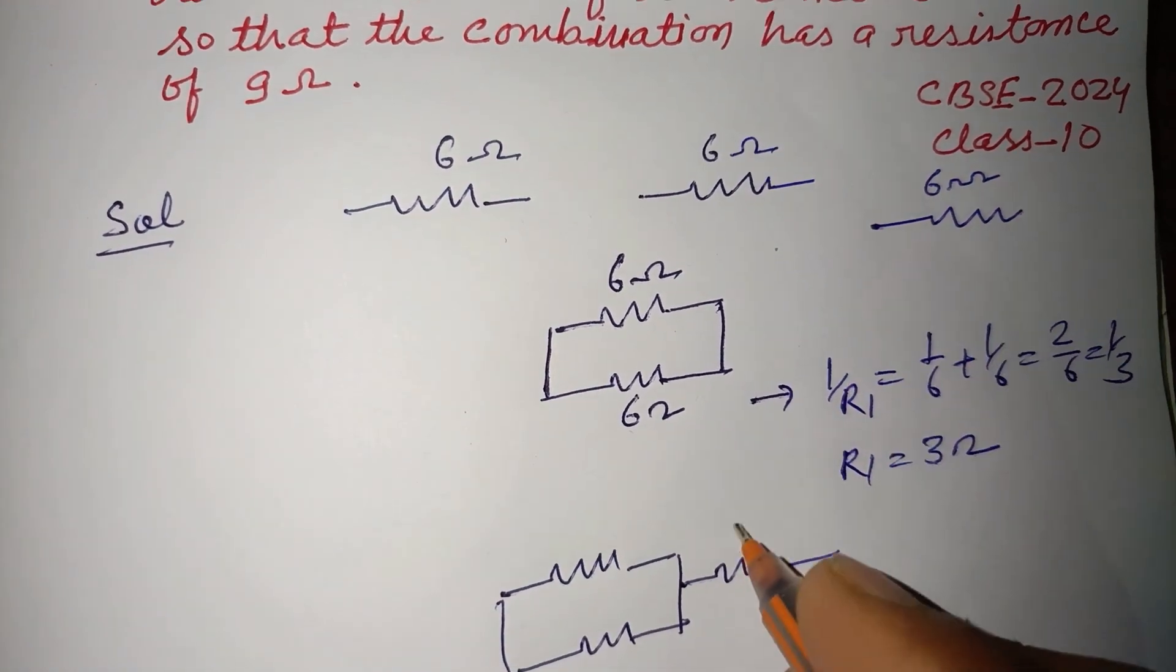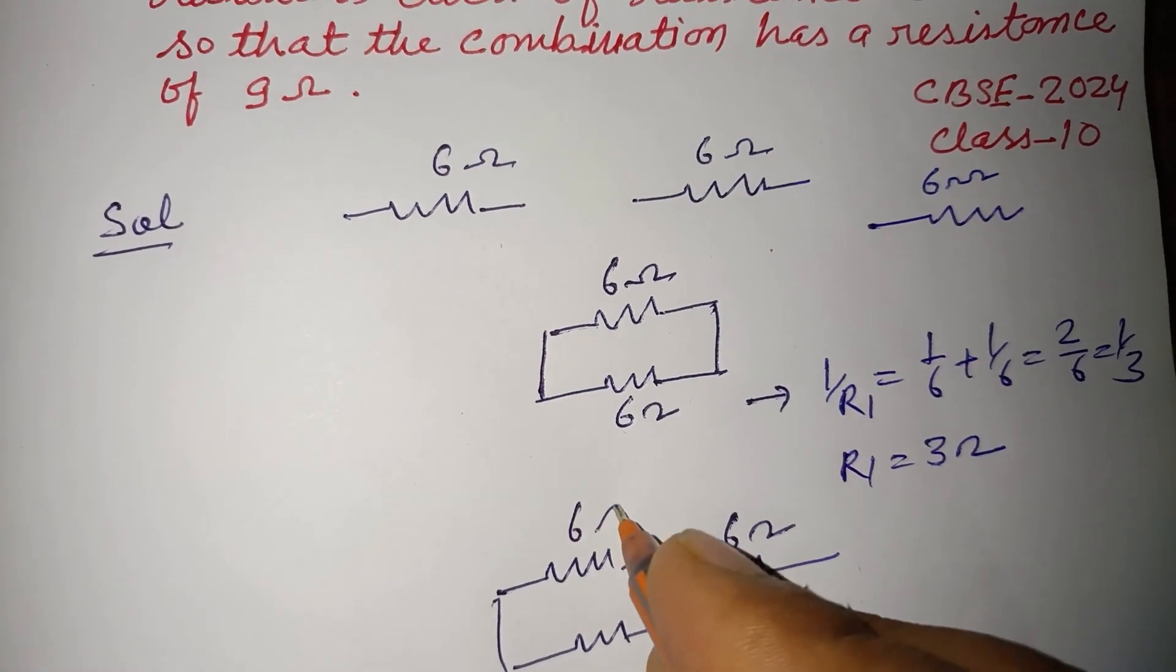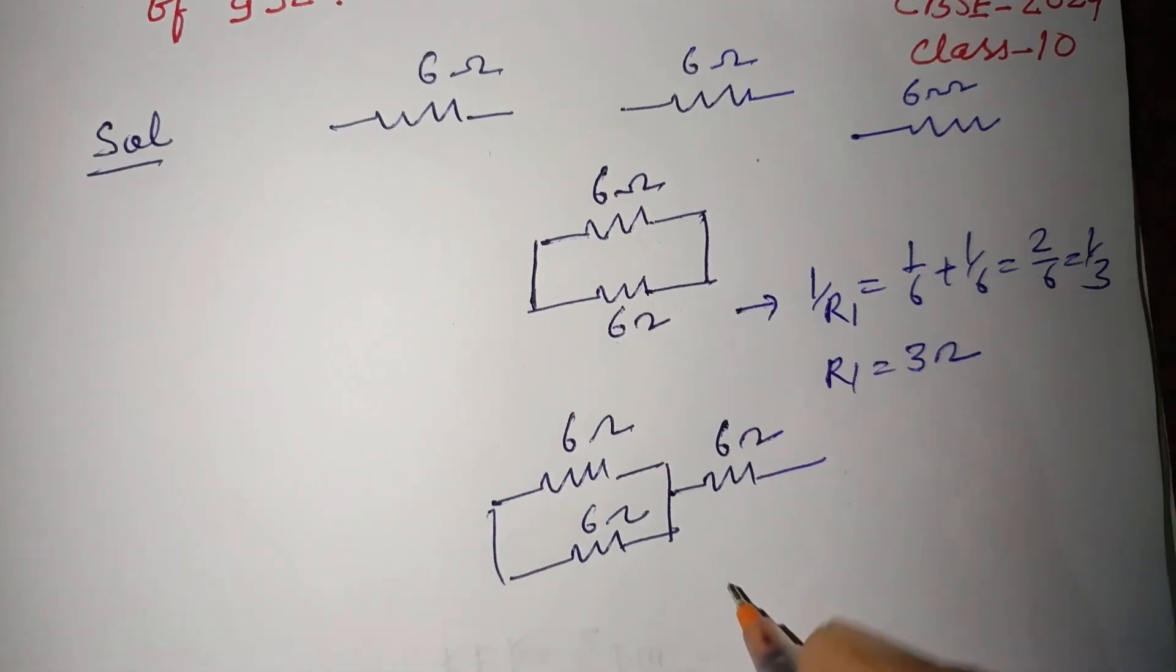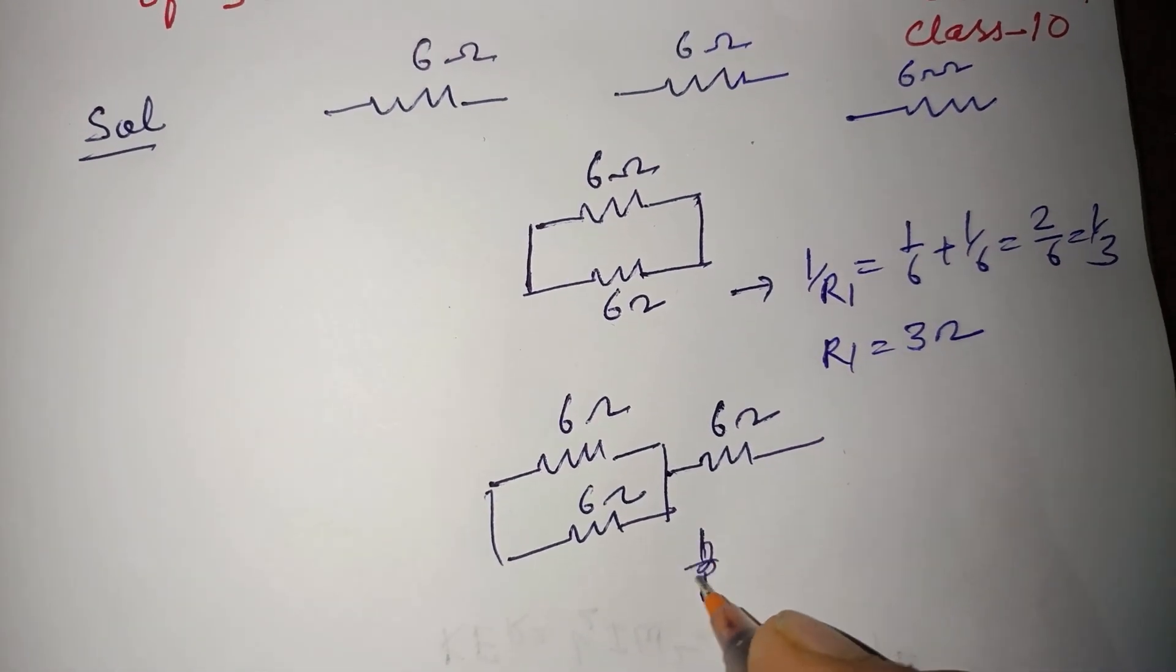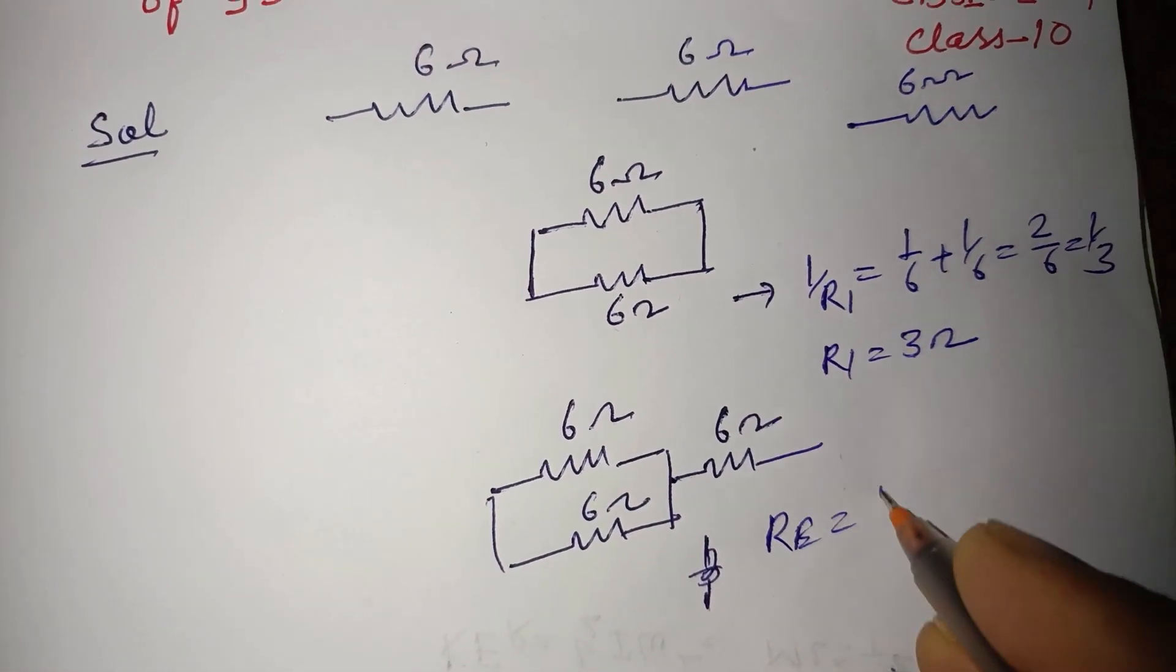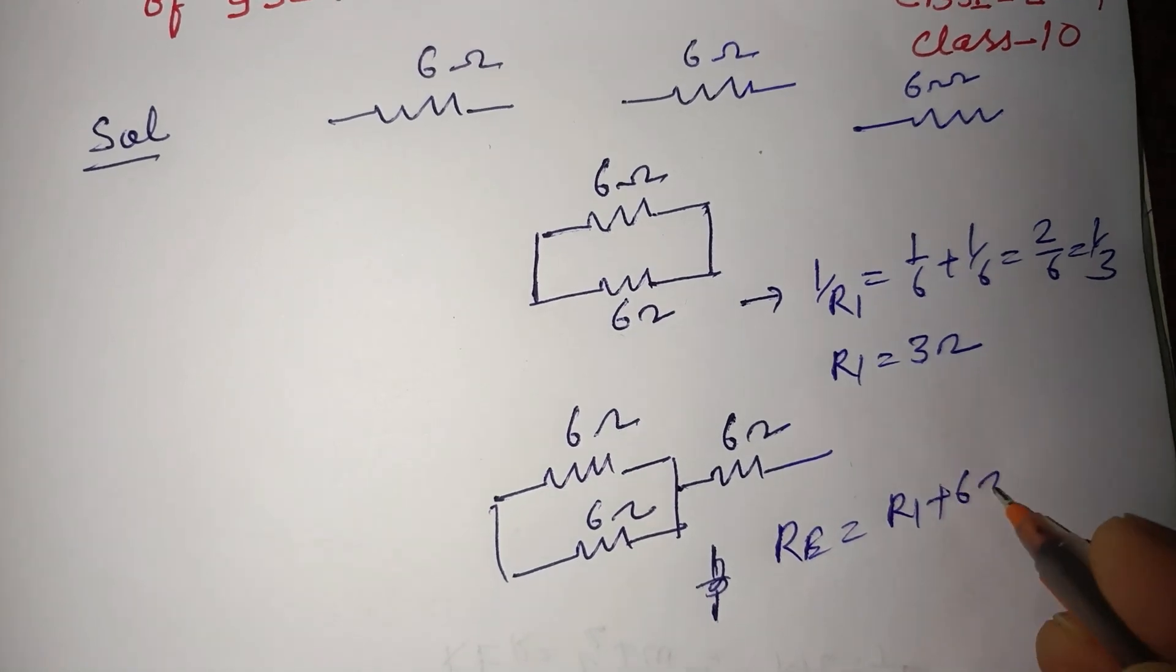...resistance of 6 ohms in series combination. So equivalent resistance, r equivalent, equals r1 plus this 6 ohms.